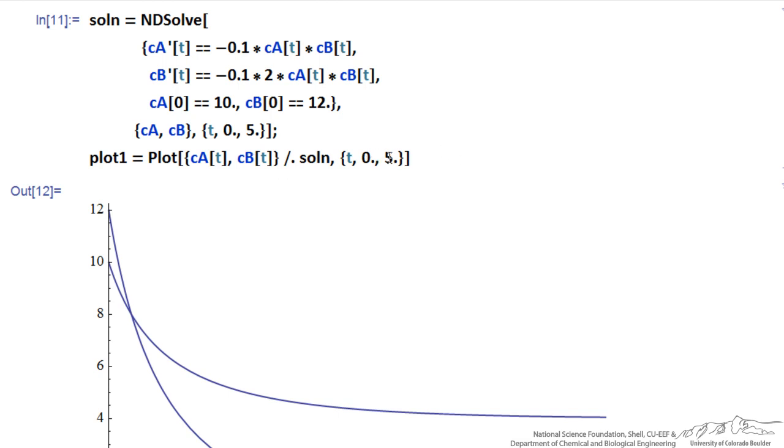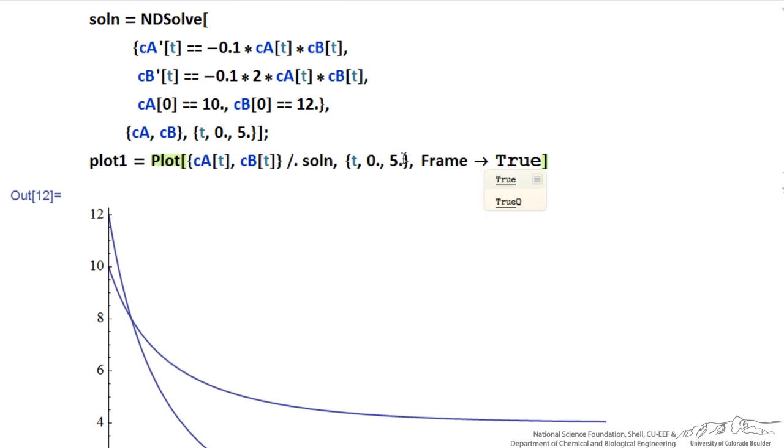So within the plot command, I'm going to put a comma here, I'm going to add a frame, capital letter, dash and the right arrow, true, means a frame will show up, now if I hit shift enter, it put a frame around the plot.